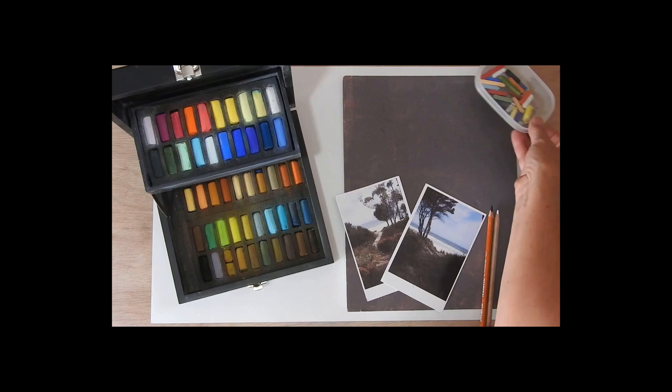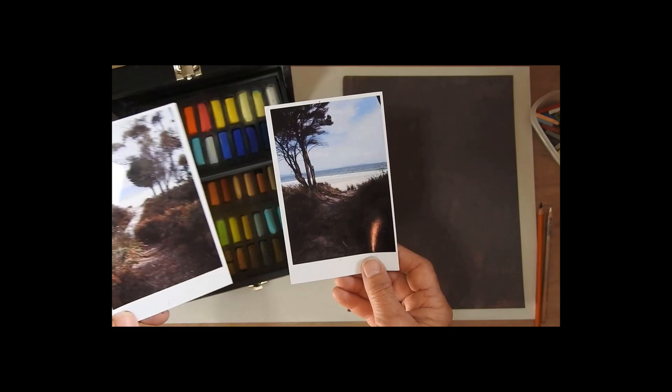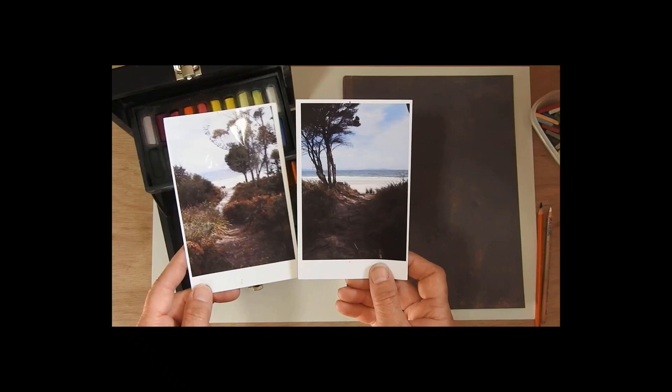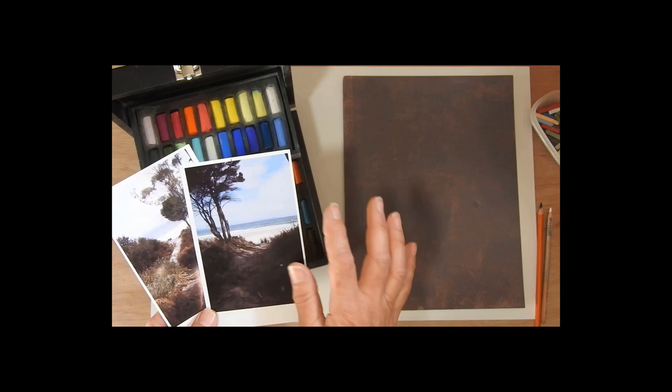For inspiration today I'm just taking these two little photos. They're just photos of beach path. Neither of them are exactly what I want. I quite like the silhouette of the tree here, I like seeing some of the shadow on the path. This one's mostly in shadow so I'll just be incorporating various aspects of both of those into an imaginary amalgamated scene of a beach path leading down to the sea and a little bit of a cloudy summer sky there.